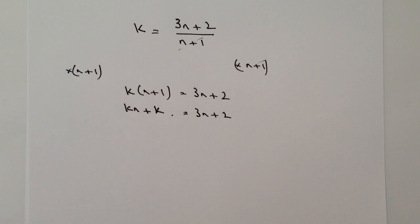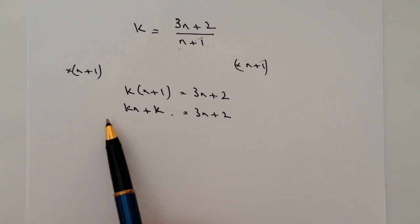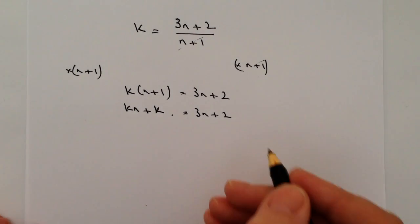And then really, it's just a matter of getting the n terms together on one side and everything else on the other. So what I'm going to do is I'm going to get this 3n over towards the left hand side.